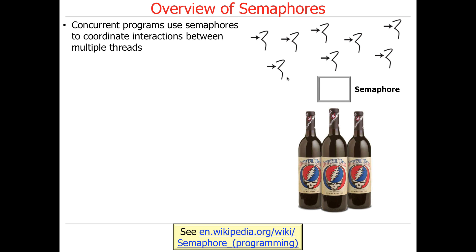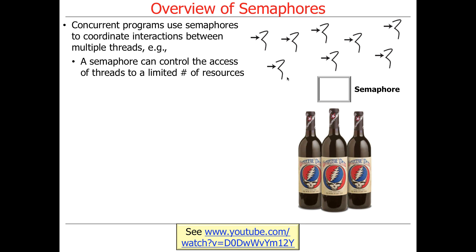Concurrent programs use semaphores to coordinate interactions between multiple threads. We're going to use an example to make this point clear. The Grateful Dead have a song called Jack Straw which has the line 'we can share the women, we can share the wine.' So we're going to share wine in this case.